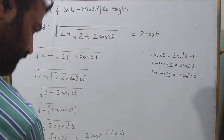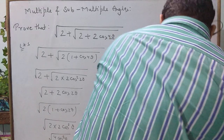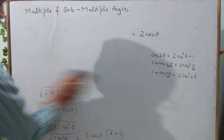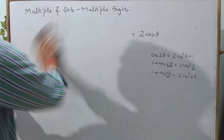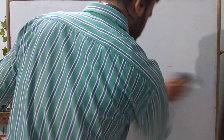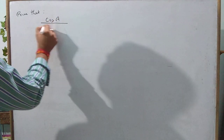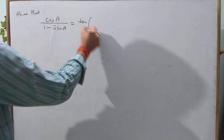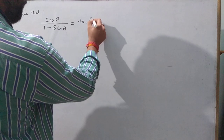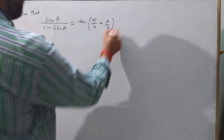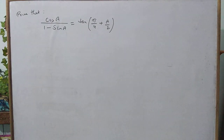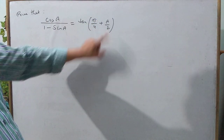The next question is: prove that cosA / (1 − sinA) = tan(π/4 + A/2). Always look at the proving part — it contains π/4 + A/2.